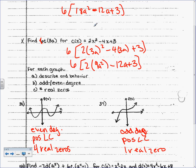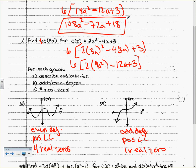And now what? Distribute the 6. Take a minute — use a calculator if you have to and see what you're going to get. What do you get? 108A squared — you could do the rest. That's minus 72A plus 18. That is our final answer.